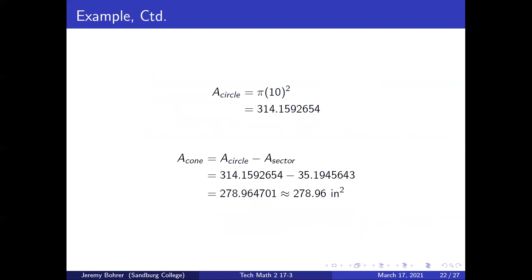The circle has an area of pi times 10 squared, which is 314.1592654. So the area of the cone is the area of the circle minus the area of the sector: 314.1592654 minus 35.1945643, which is approximately 278.96 square inches.